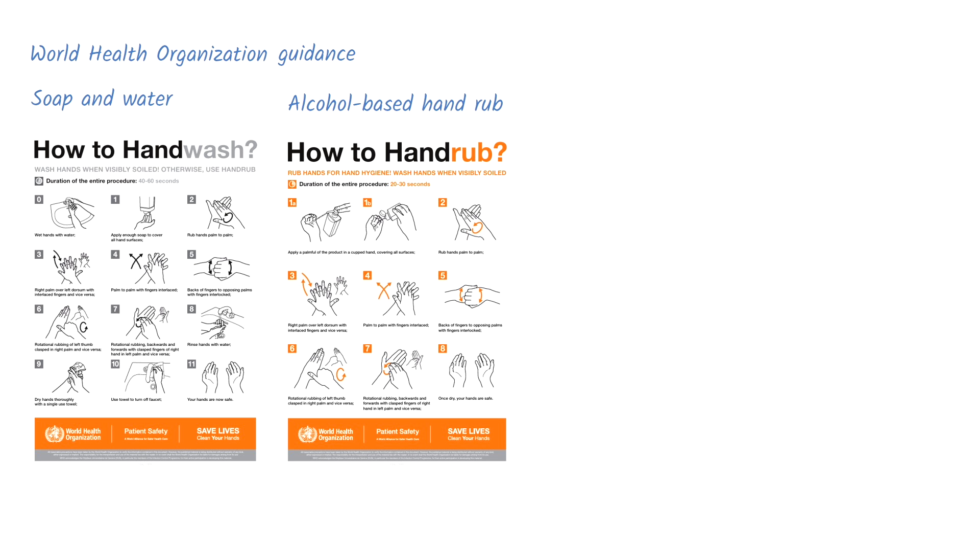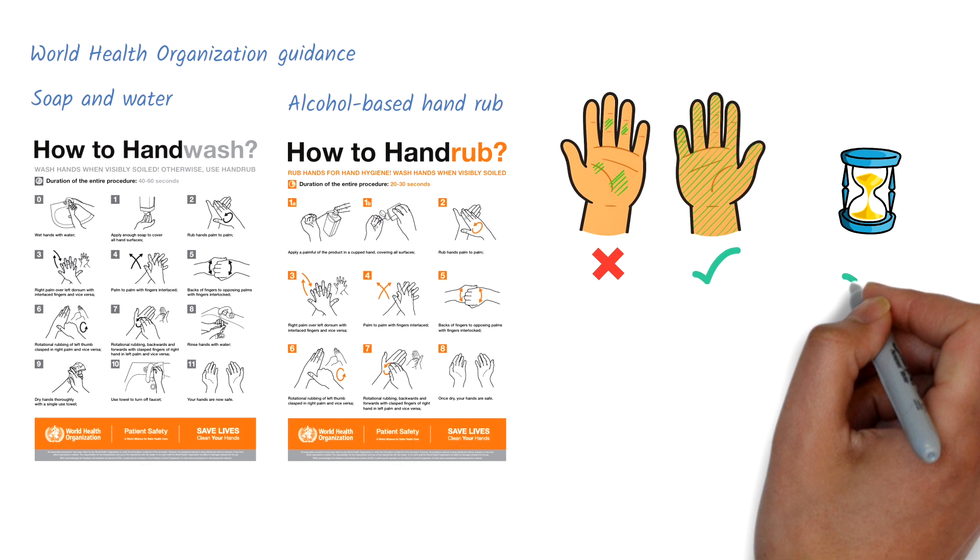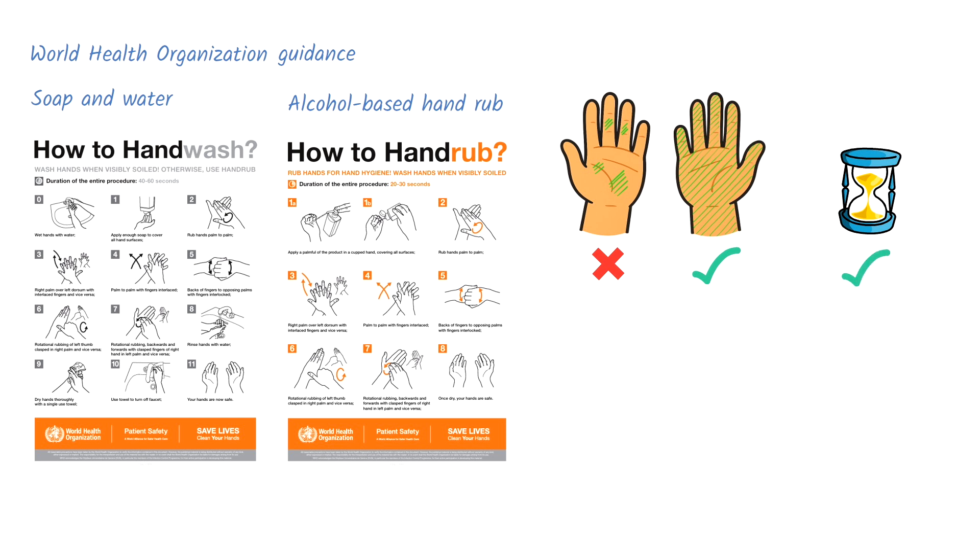For either method to be effective, it must be applied to all surfaces of the hands and used for the recommended duration. Each technique follows specific steps to ensure thorough coverage and optimal effectiveness. The recommended time for hand washing with soap and water is 40 to 60 seconds, and 20 to 30 seconds when using an alcohol-based hand rub.